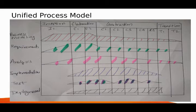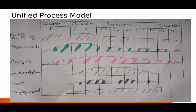In business modeling, requirements, and analysis, initially there is more work — as shown graphically in the figure — and as the project moves toward the end, the work decreases. In implementation and testing, the work is done for each model deployed, and deployment work is more at the end of the project.